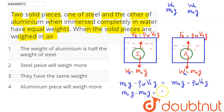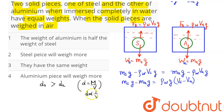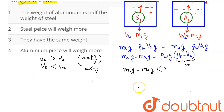Rearranging, m_s·g − m_a·g = ρ_w·g·(V_s − V_a). Now, since density of steel is greater than density of aluminium, and density equals mass over volume, for similar masses volume is inversely proportional to density — so volume of steel is less than volume of aluminium. Therefore (V_s − V_a) is negative, which means m_s·g − m_a·g is less than zero.